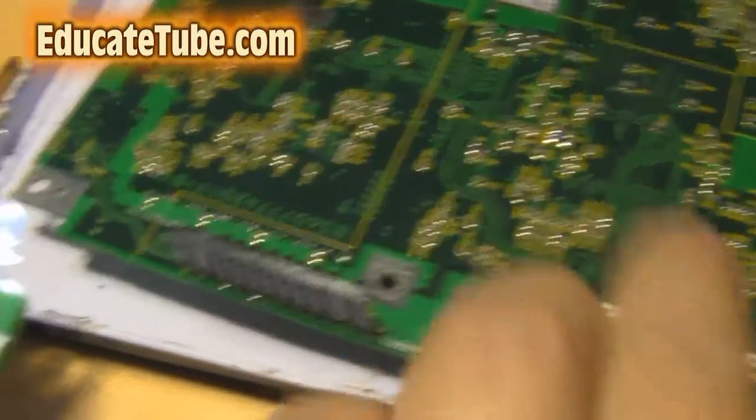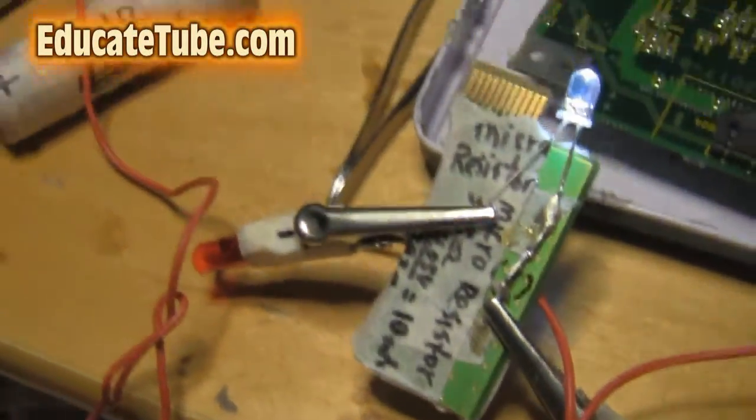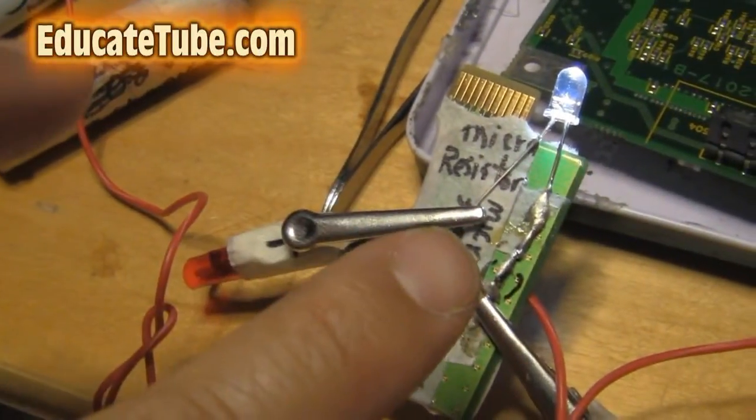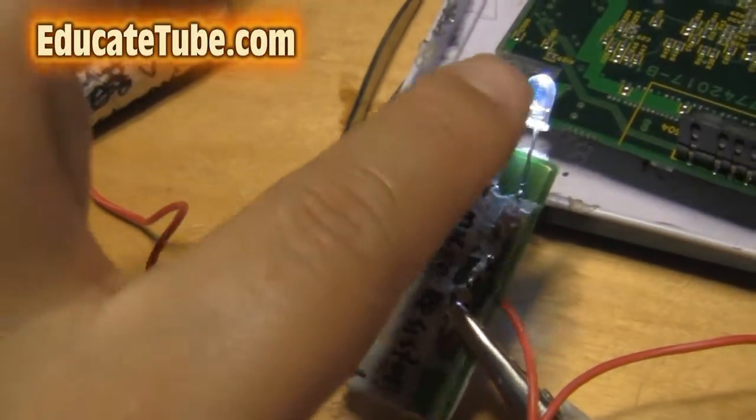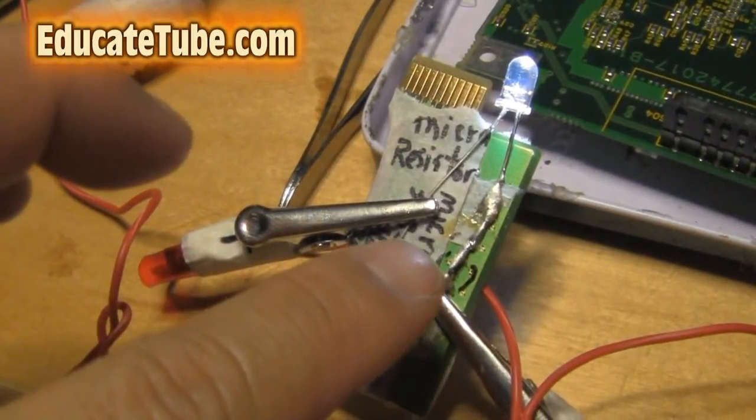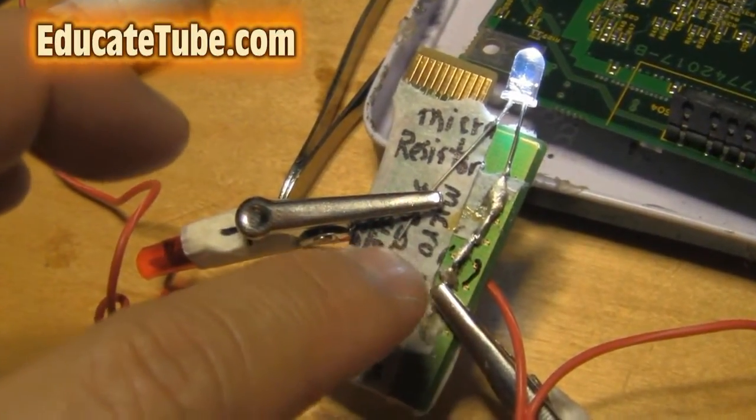They're very tiny. I took them out and thought if I could find the right resistor for my LED light, I could basically solder them in.